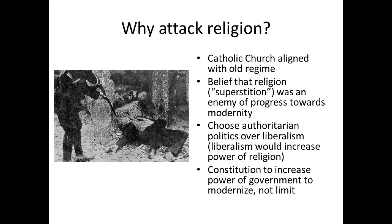This priest was not involved in any violent political activity — he was framed, arrested, and executed. This is pretty shocking and shows how the persecution of religion led to a lot of violence. You can understand why something happened and still think it's wrong. The Catholic Church had been aligned with the old regime — the regime the new government was trying to get away from — so they didn't trust it. In addition, there was this belief that religion, which they basically equated with superstition, was an enemy of progress toward modernity.